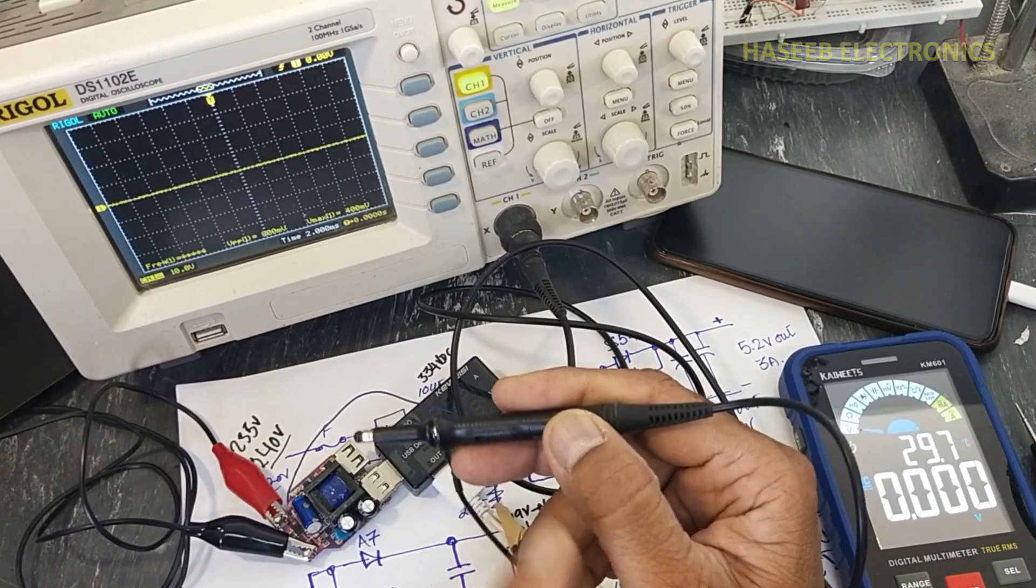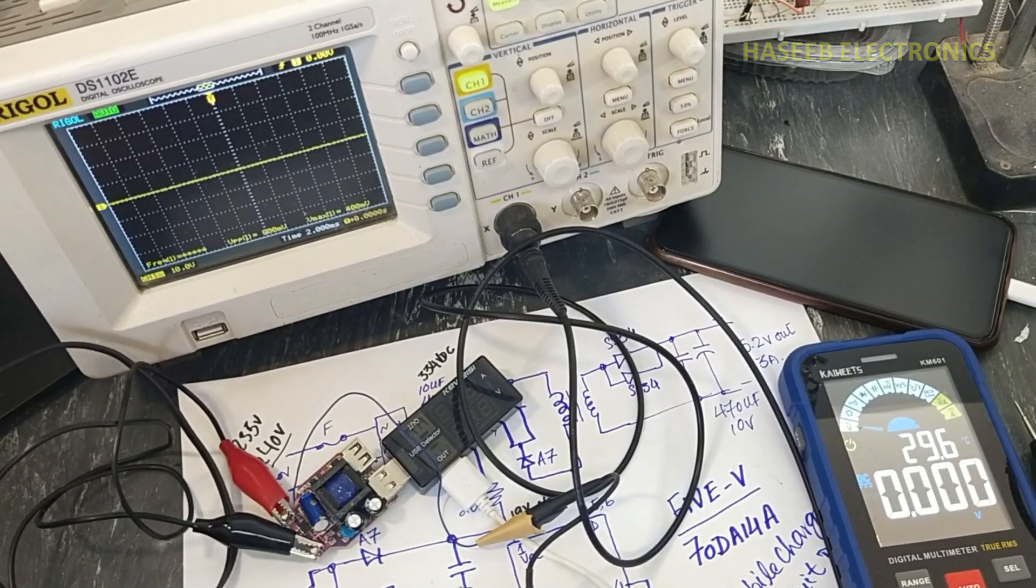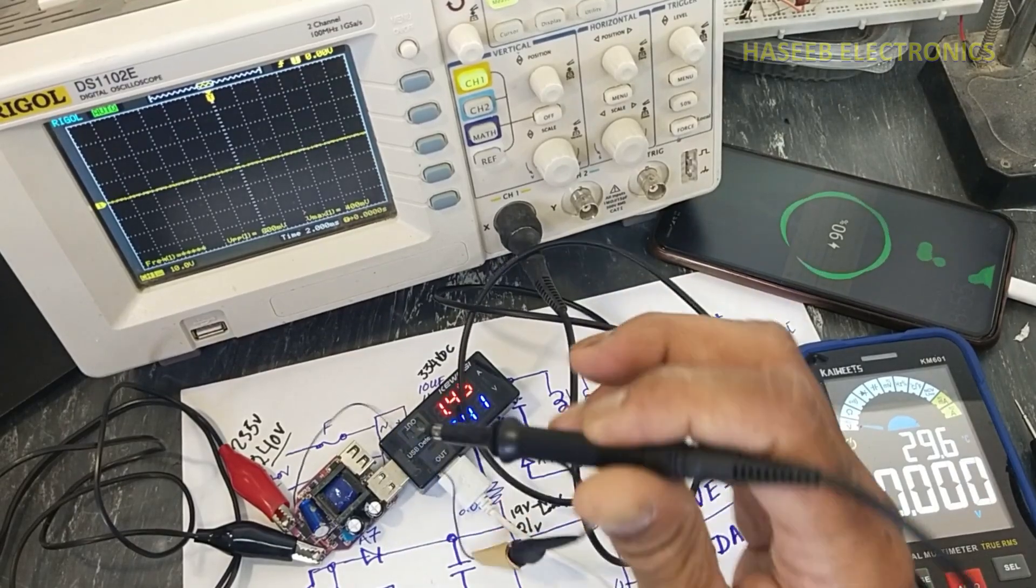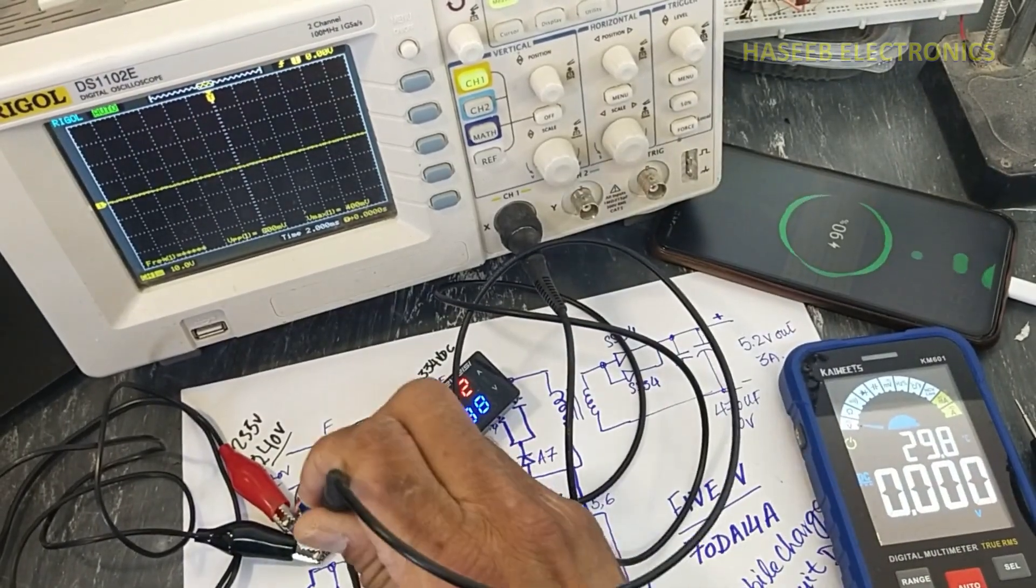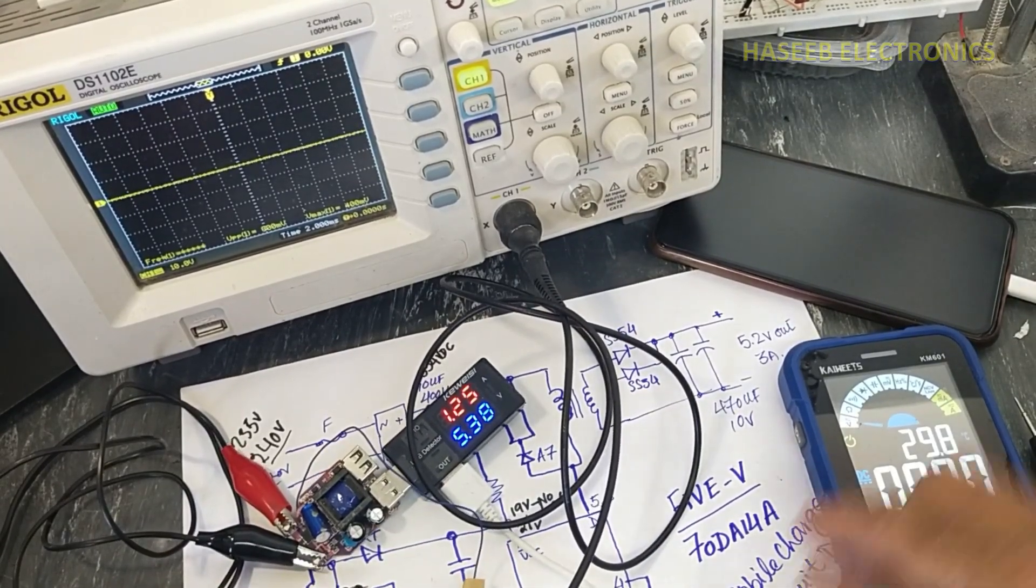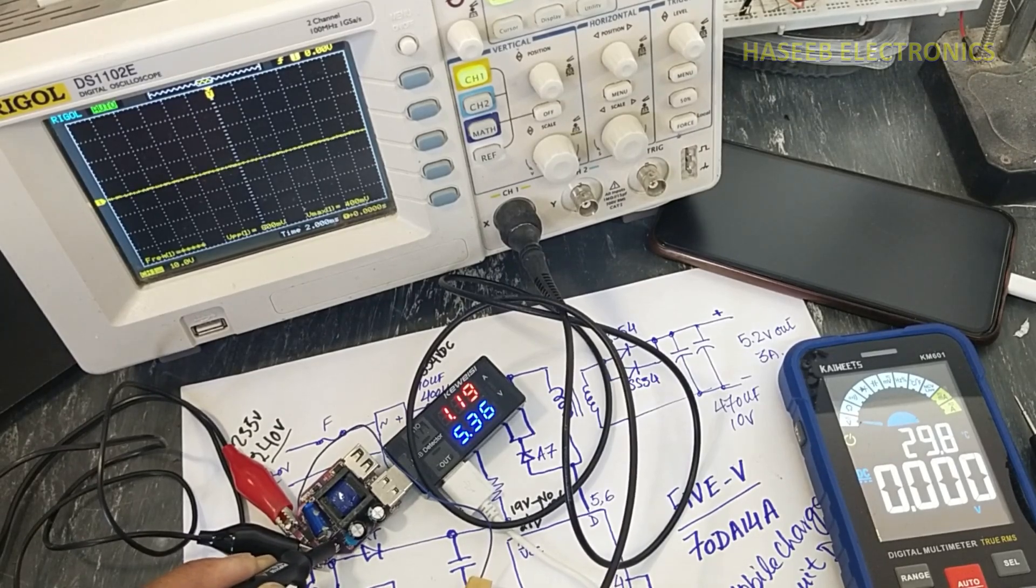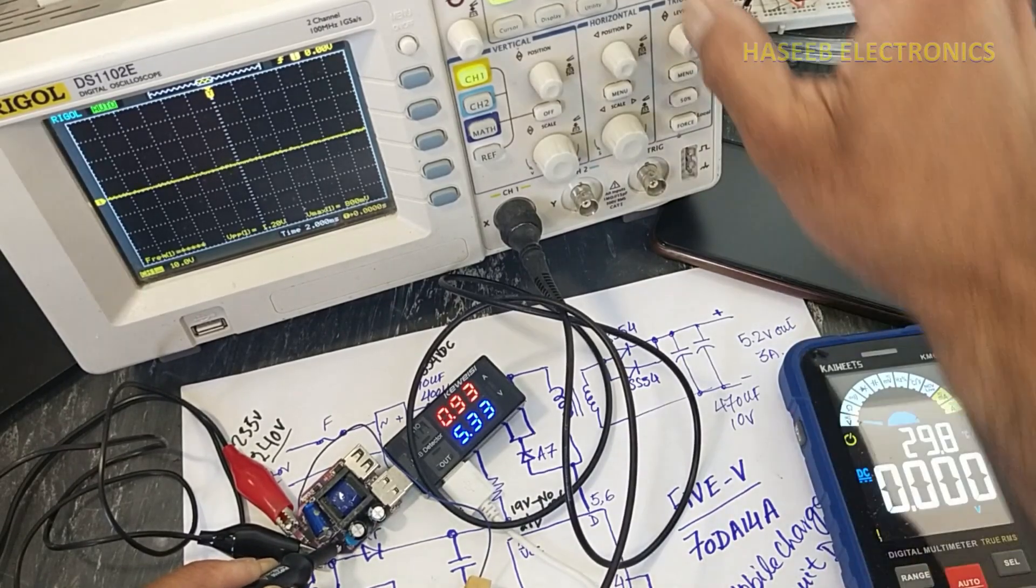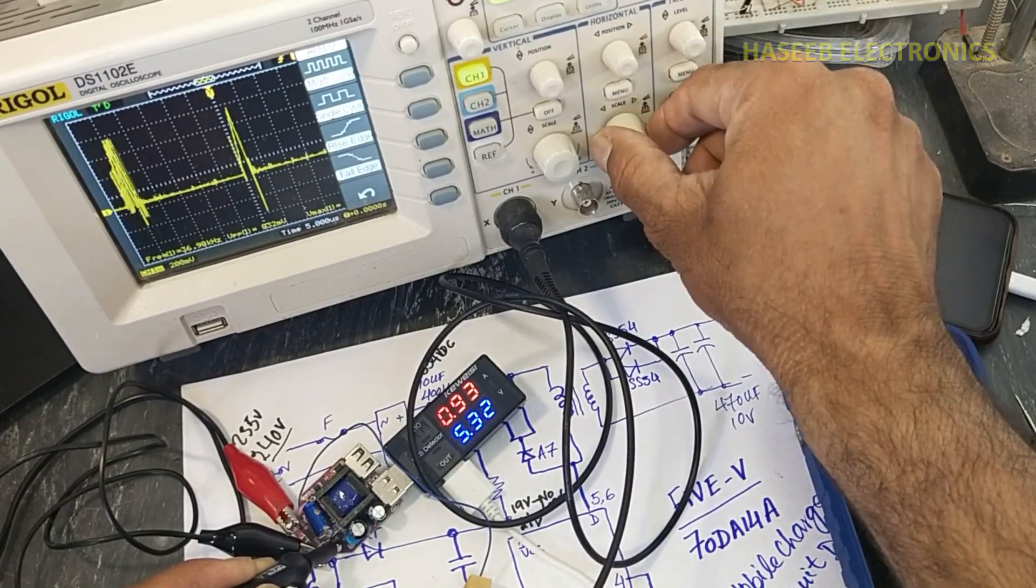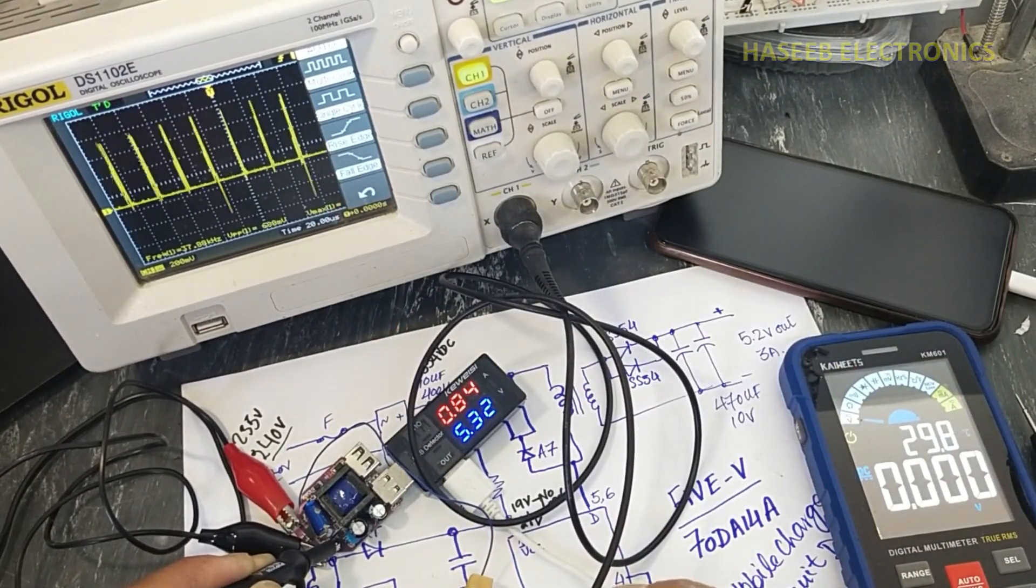Now I am setting probe to 1x to test current sense signal. I will connect at pin number four of this IC. So this is current sense signal.